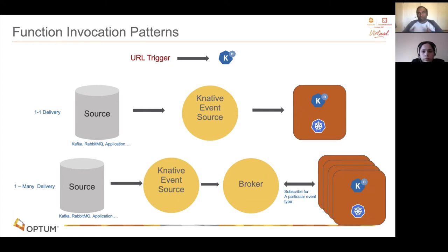That's where the broker comes in. You have the source which takes the event and puts it into the broker — which is like an event ingress, a buffer, or a state store for all incoming events. We can also have a trigger, which is another Knative resource where you specify which types of events need to be routed to which sink. For example, if I have a Knative service looking for Kafka events, I create a trigger specifying Kafka events alone, and the broker will deliver only those events to that Knative service.